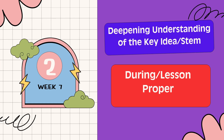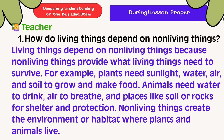Deepening Understanding of the Key Ideas. How do living things depend on non-living things? Living things depend on non-living things because non-living things provide what living things need to survive. For example, plants need sunlight, water, air, and soil to grow and make food. Animals need water to drink, air to breathe, and places like soil or rocks for shelter and protection. Non-living things create the environment or habitat where plants and animals live.